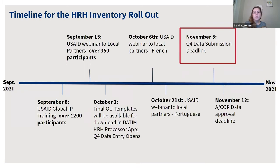The HRH timeline matches all other Q4 timelines. The red box on the timeline shows November 5th as the Q4 data submission deadline — this Friday — and the final deadline of November 12th, which is when approval must be completed.